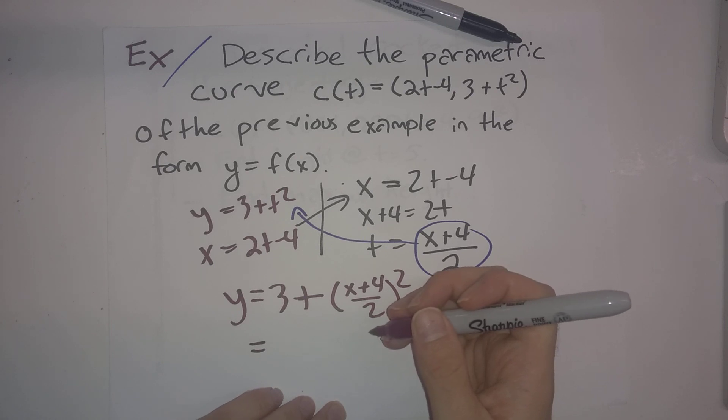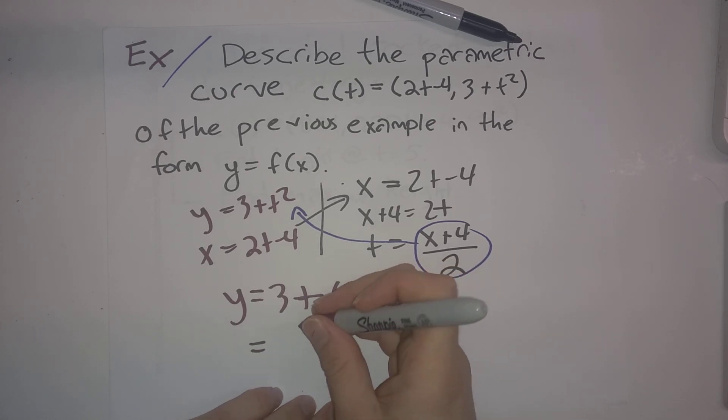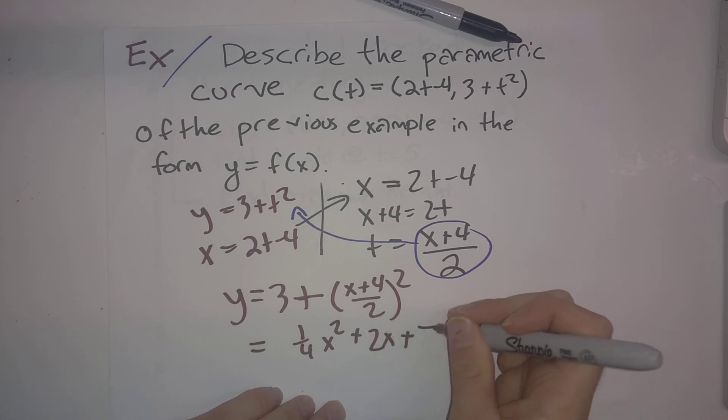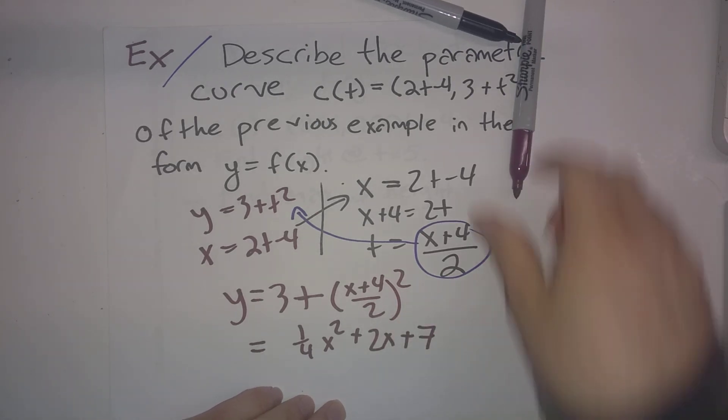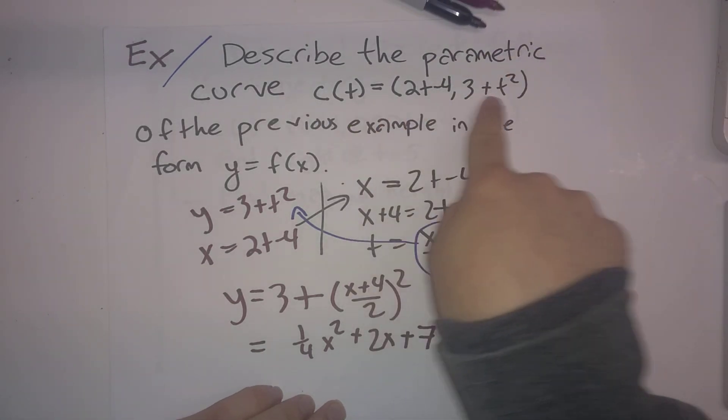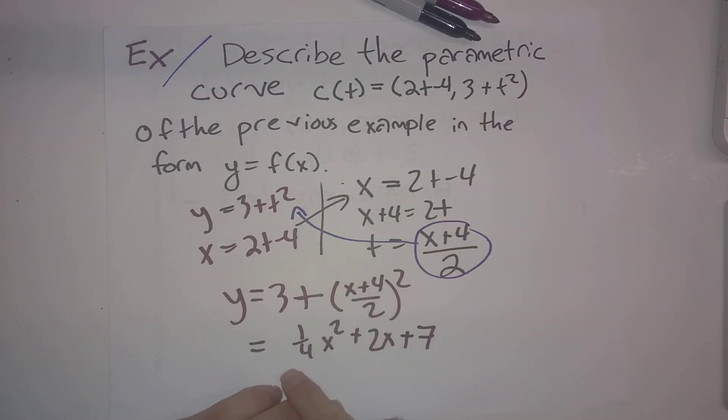And if we want to simplify that, this ends up as (1/4)x² + 2x + 7. So really, this parametric curve here is tracing out the same curve that would be traced out by the function y = (1/4)x² + 2x + 7.